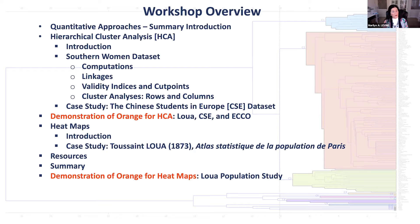We are going to look at what a heat map is. I will show you what I believe is the earliest heat map: the Atlas Statistique de la Population de Paris by Lua. I have uploaded the ranged database dataset so you can practice in Orange yourself. I am also going to post a step-by-step guide to Orange, and then we will do a demonstration with a chance for questions.